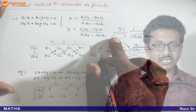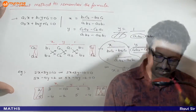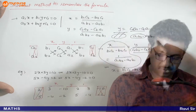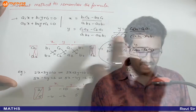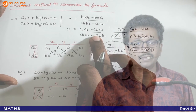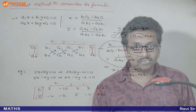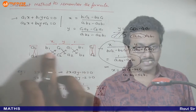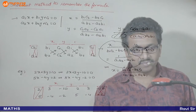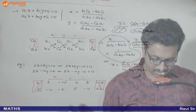Similarly, y by this is equal to 1 / (a1b2 - a2b1), so numerator goes up: y = (c1a2 - c2a1) / (a1b2 - a2b1). Formula aa gaya. Yeh formula aapko yaad karne ki zaroorat nahi — just write this expression and you get the answer.